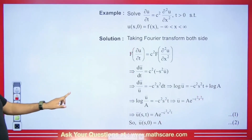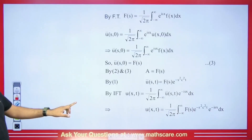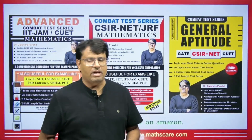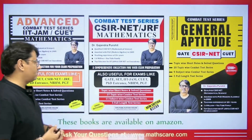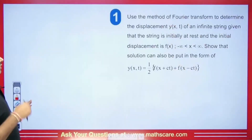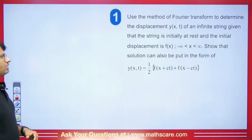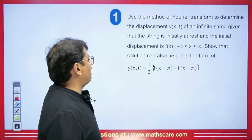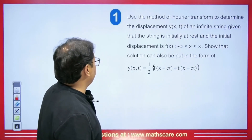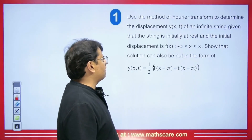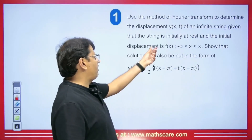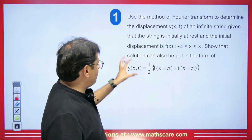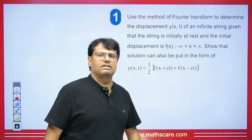This is the method I have explained here — you can see it. If you are preparing for CSIR NET, IIT JAM, or GATE exams, my books are available on Amazon or Flipkart. Now I will explain one more question based on this, which is slightly different: use the method of Fourier transform to determine the displacement y(x,t) of an infinite string, given that the string is initially at rest and the initial displacement is f(x), with x from −∞ to ∞.